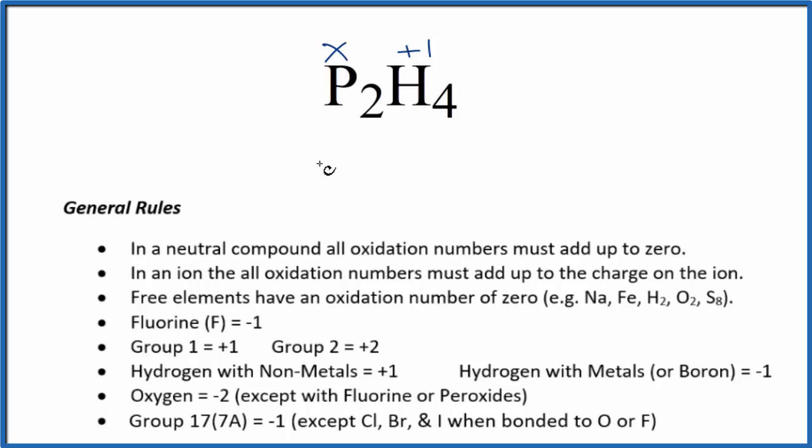We can set up an equation: 2 times X, so 2X, plus 4 times 1, all of that will equal zero. So we have 2X + 4 = 0, therefore 2X = -4. Dividing both sides by 2, X = -2.